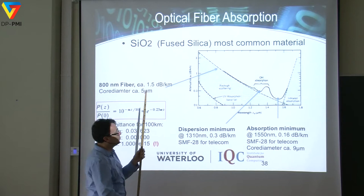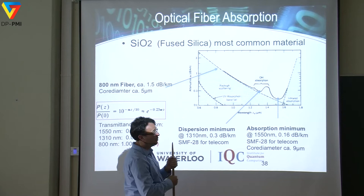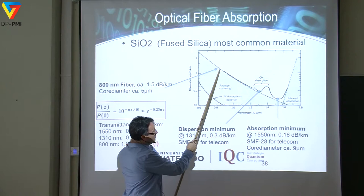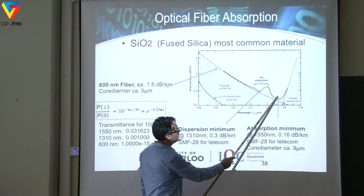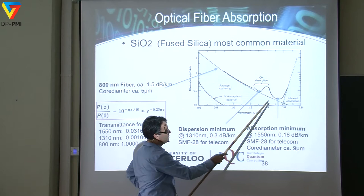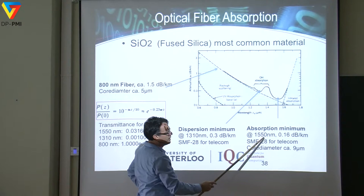For single-mode glass fibers, transmission losses are critical. For silica, the transmission curve shows Rayleigh scattering on one side dropping with wavelength, then increasing again. The main telecom band at 1550 nanometers was chosen because it has the overall best transmission — the minimum loss point. The 1310 nanometer window also exists, which is where standard glass has a dispersion minimum, important because pulses are not dispersed as much there, though losses are not quite as good as at 1550 nm.